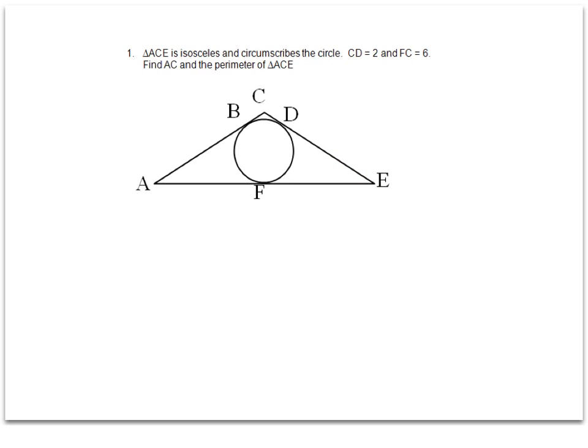And because we have the points of tangency, that just means that segment DE will be congruent to AB, and then separately CD will be congruent to BC.